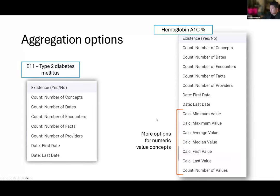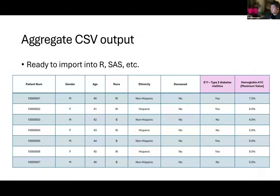Looking at this mock-up again — for existence, you would see yes or no for each patient; for maximum value, you would see what is the maximum HbA1c for that patient. This is one patient per row, and you could have several other columns with either the same or different concepts with different aggregation options.